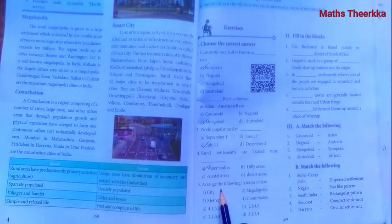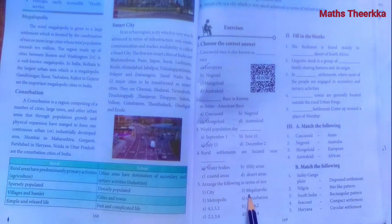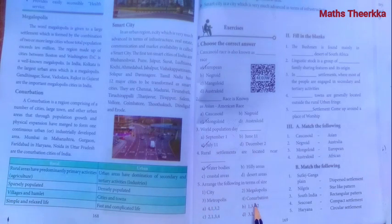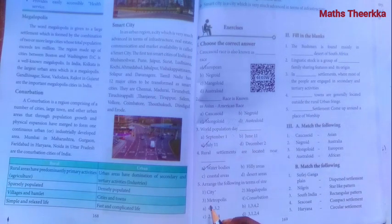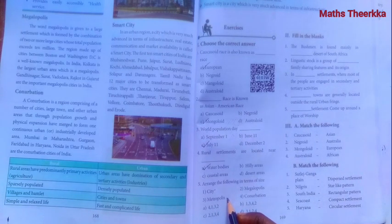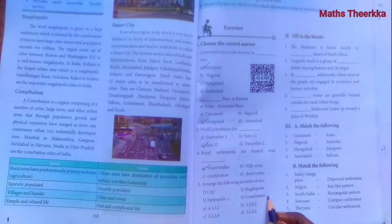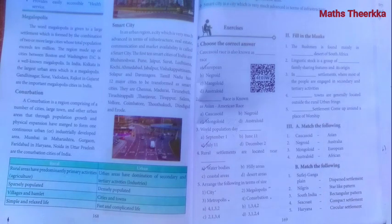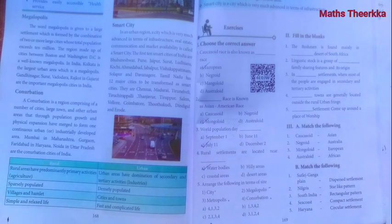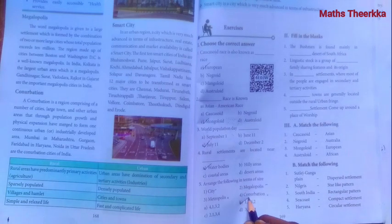Fifth one: Arrange the following in terms of size. First: City. Second: Metropolis. Third: Conurbation. Fourth: Megalopolis. So the order is 1, 3, 4, 2. Option B.